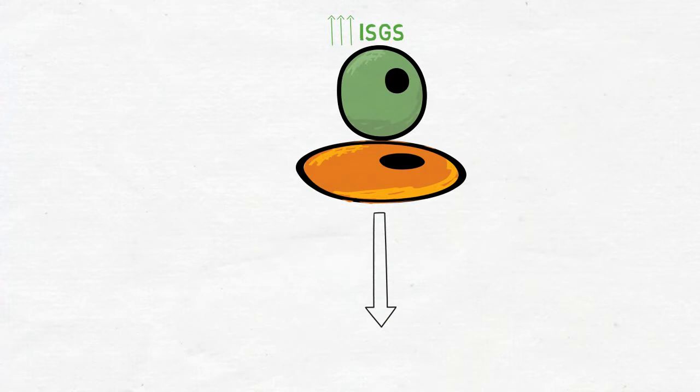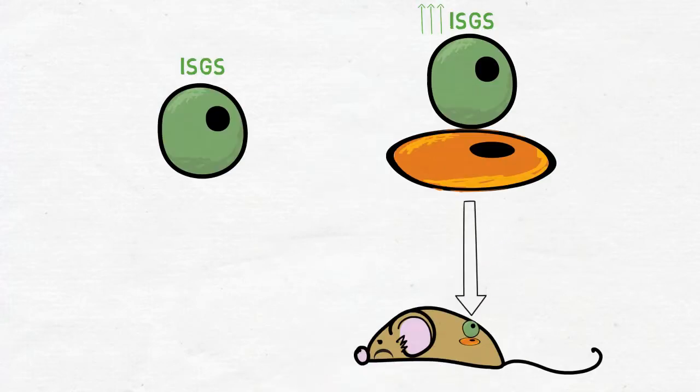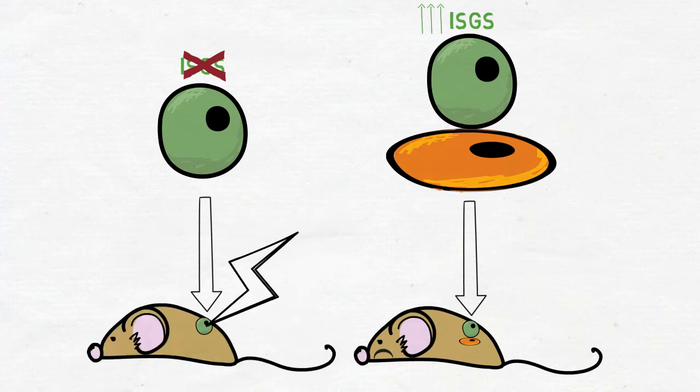As a consequence, breast cancer cells expressing these ISGs with the help of fibroblasts are resistant to therapy in mice, while tumors comprised of breast cancer cells alone respond very well and the mice are cured.